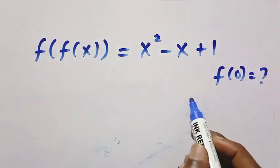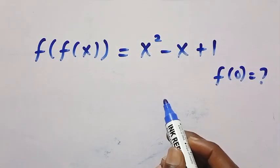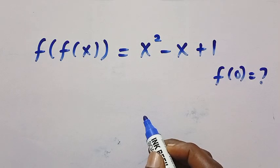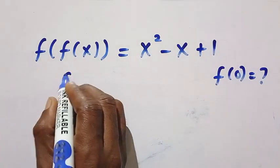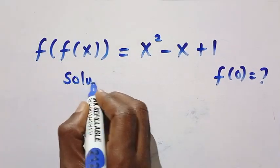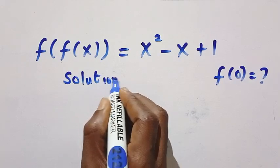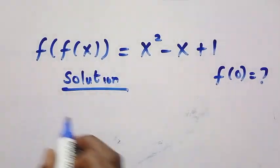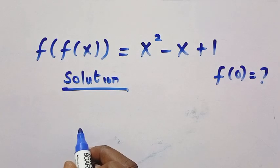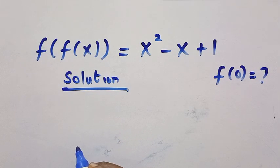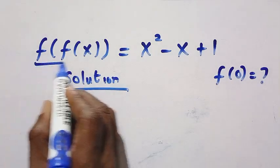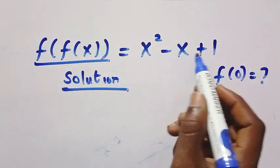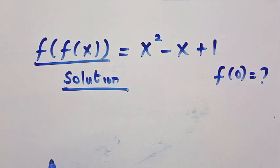How can we get f of 0? This looks tricky, and we are going to be solving this step by step. If you consider the solution from the given equation, we have f of f of x. Suppose I introduce another f — apply f to both sides of f of f of x equals x squared minus x plus 1.